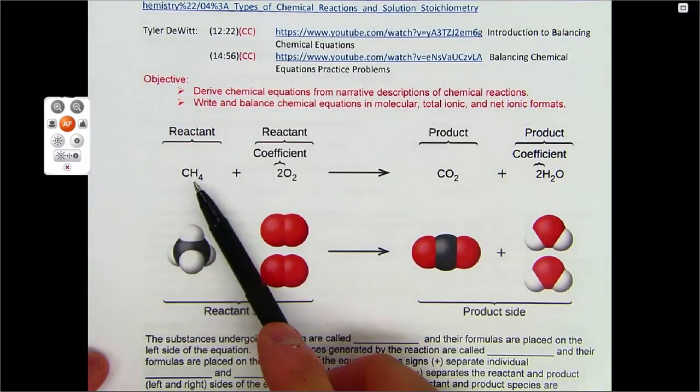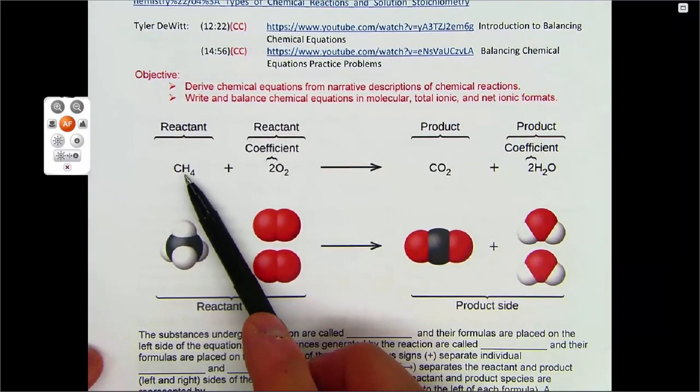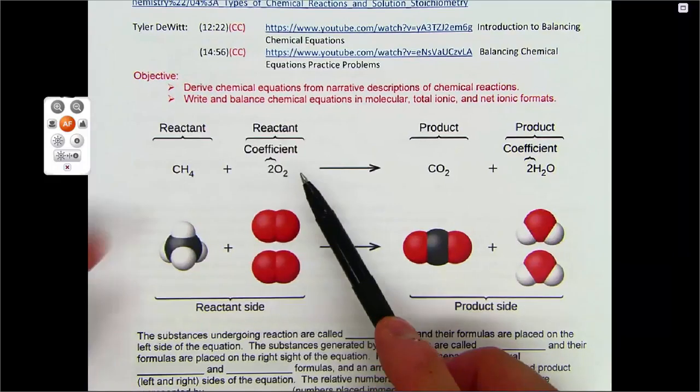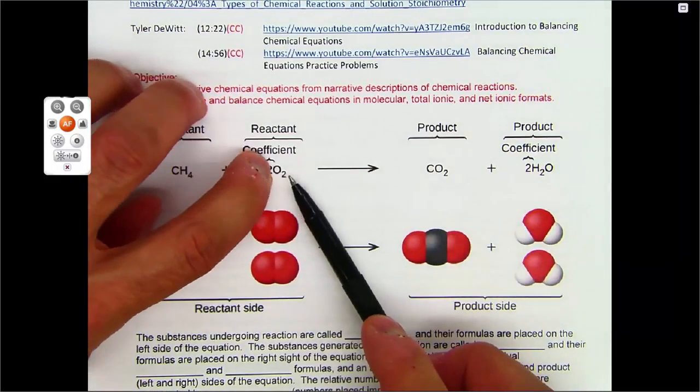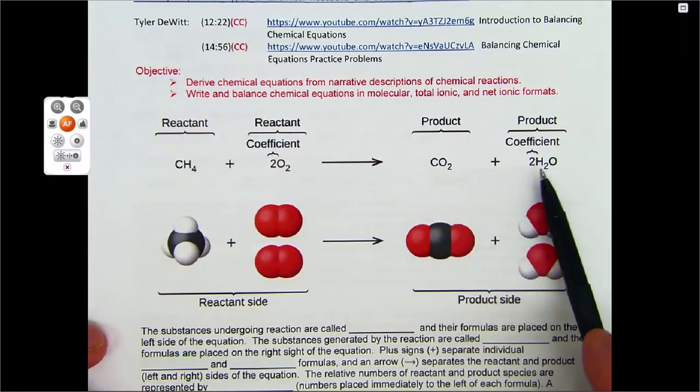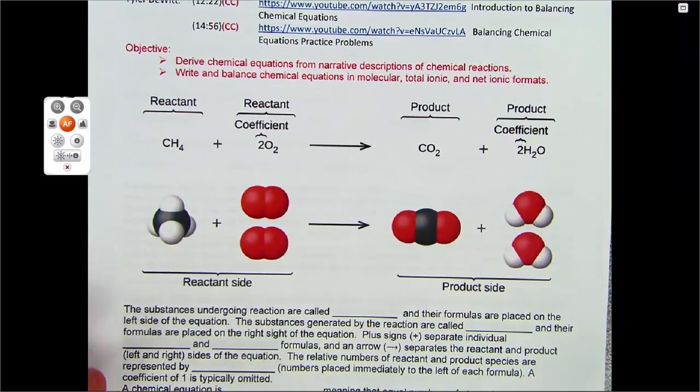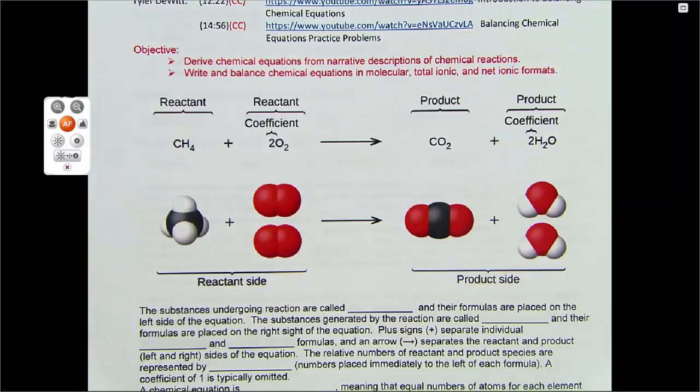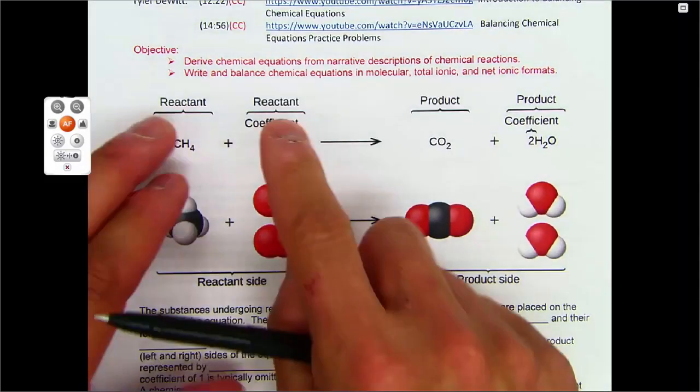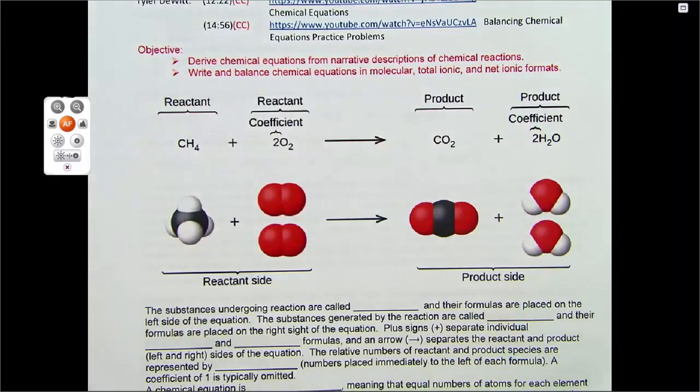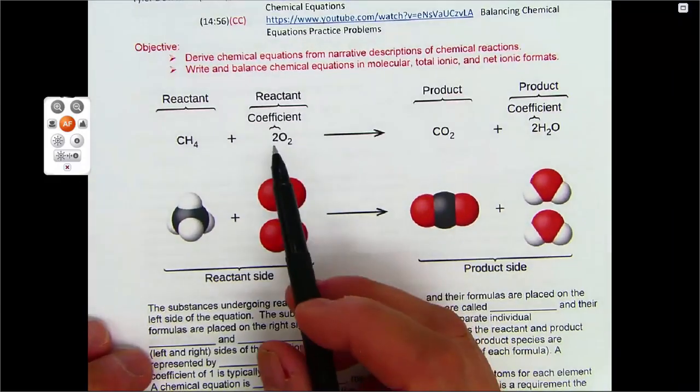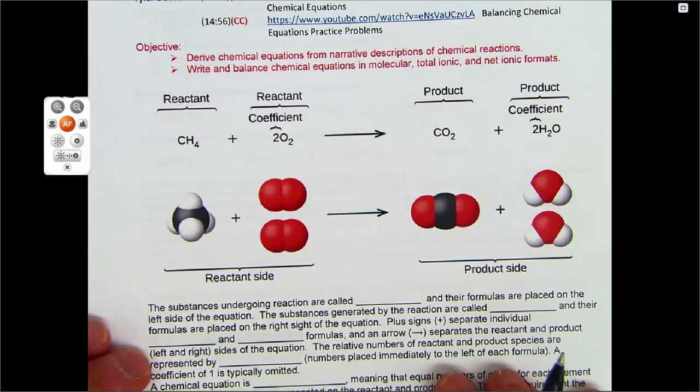this is burning natural gas. So this is methane, it takes oxygen, and we're going to get carbon dioxide and water. But the law of conservation of matter says we cannot lose elements from one side to the other, from the reactant side to the product side. So we need to have the same exact number of atoms on both sides.